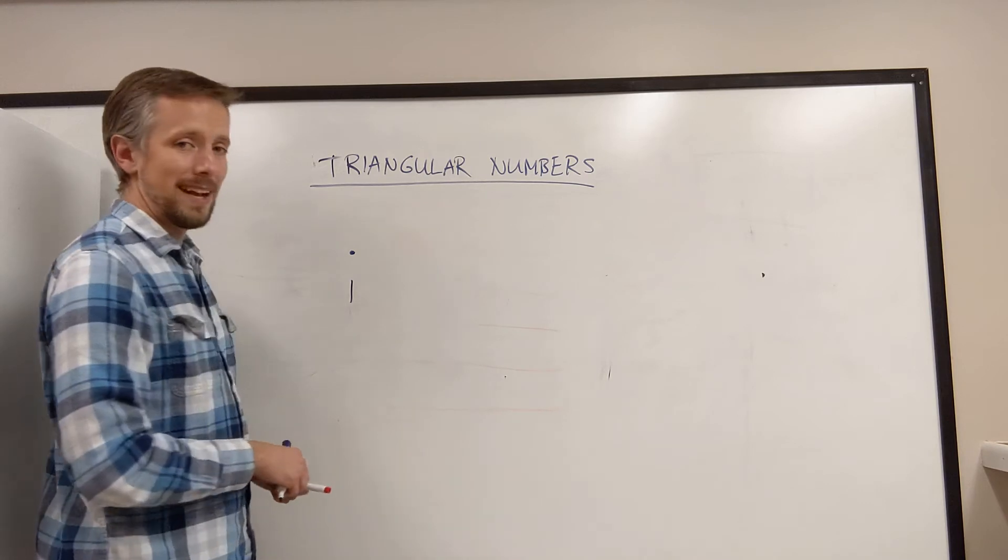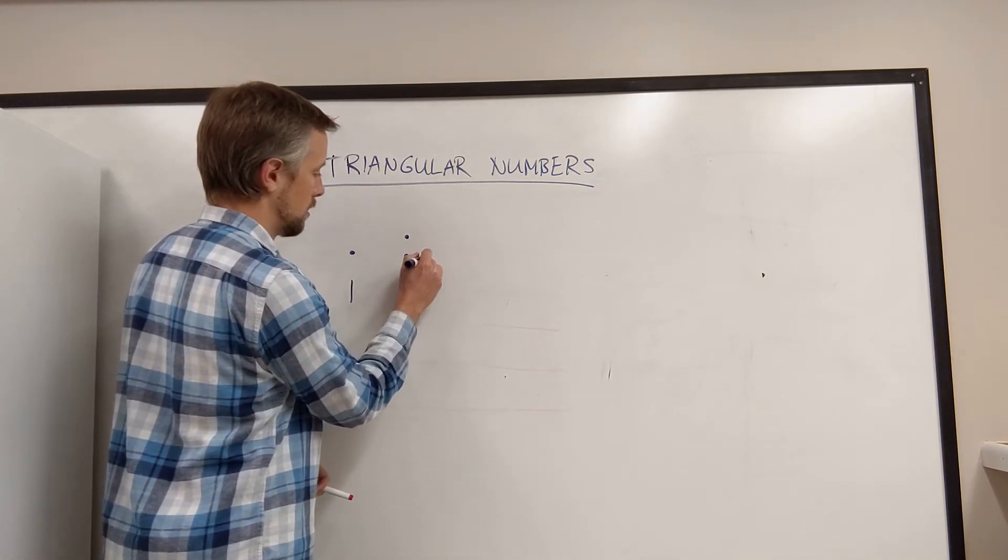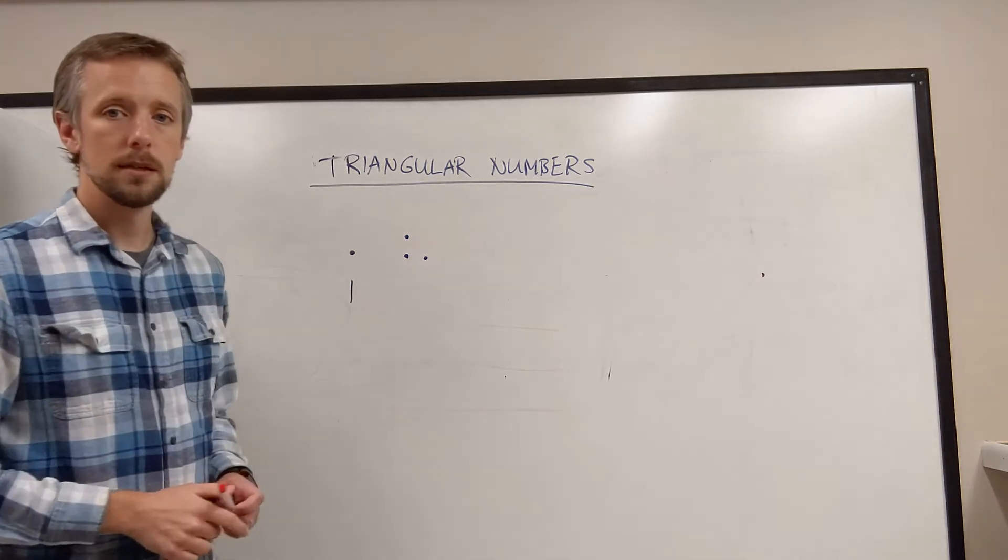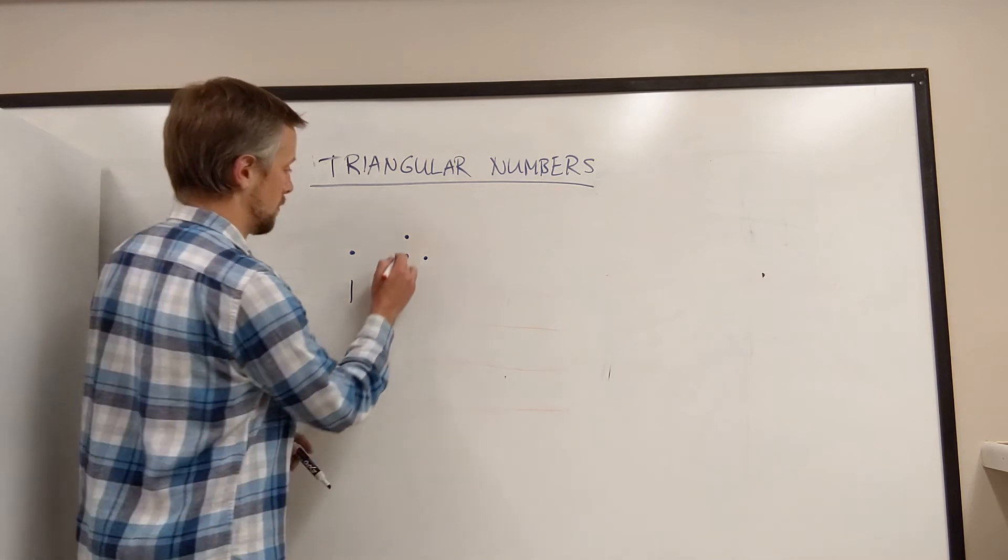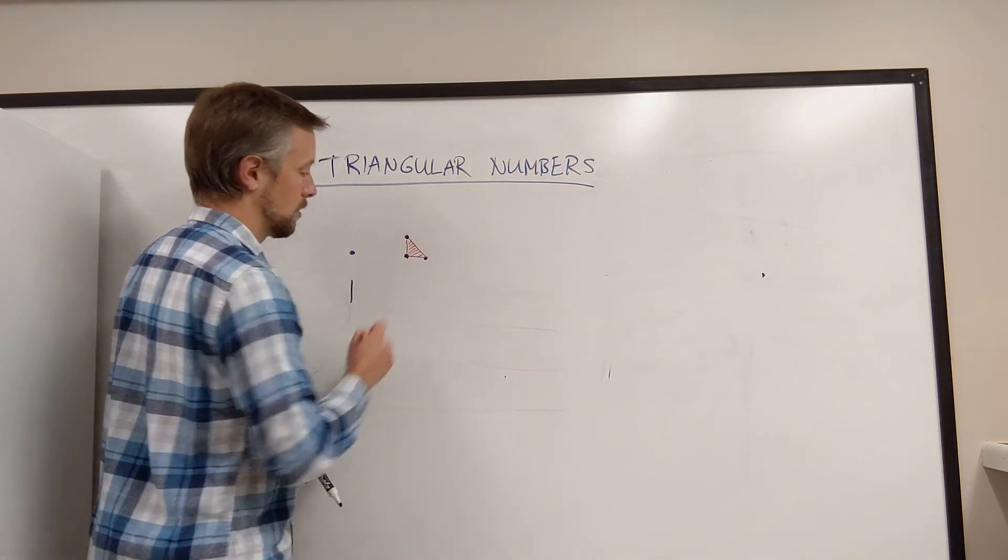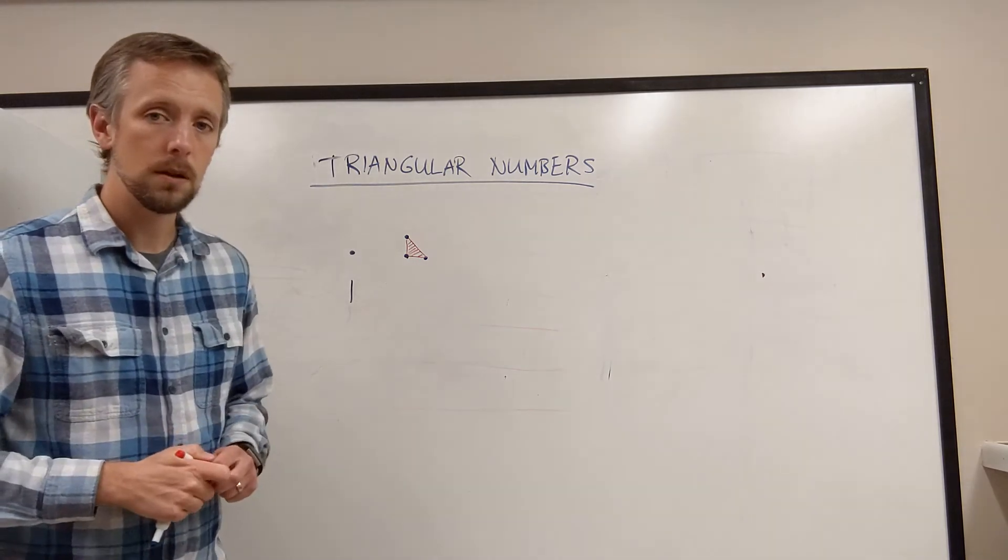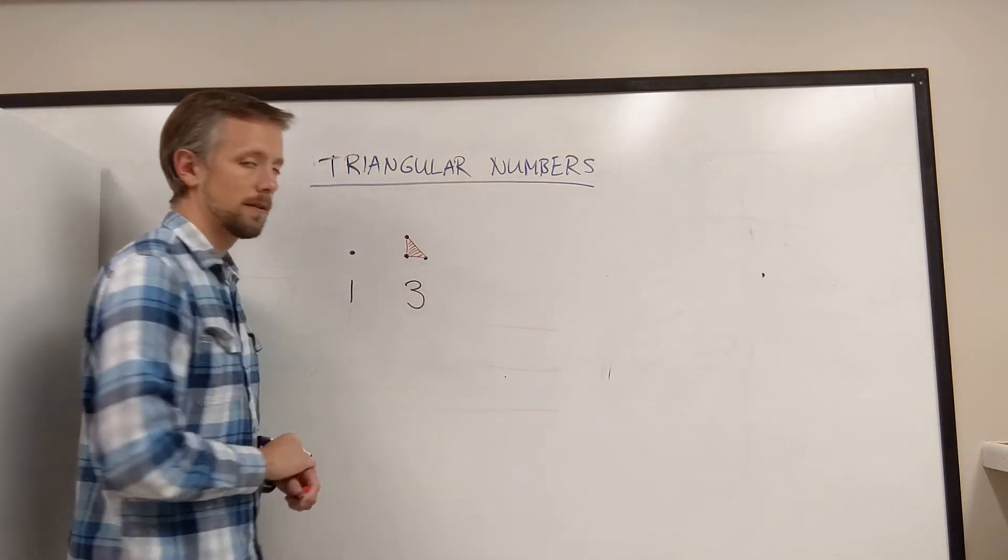To represent the next triangular number, I'm going to draw 3 dots like this. Do you see the triangle? Those 3 dots form a triangle. And so my second triangular number is the number 3.